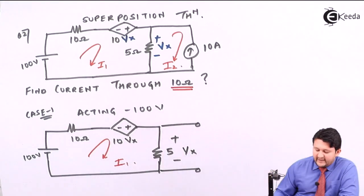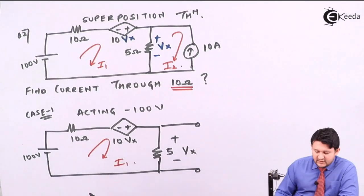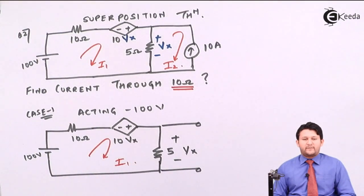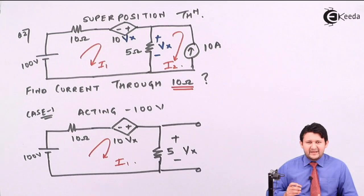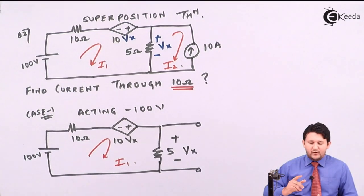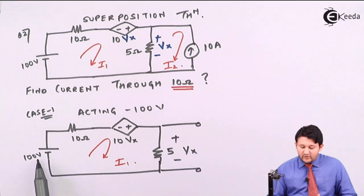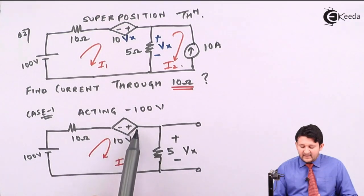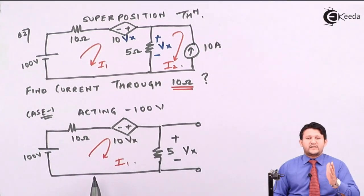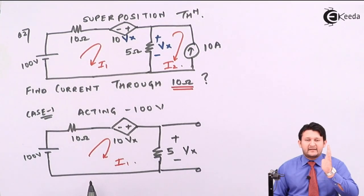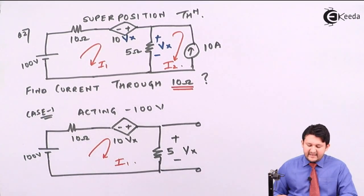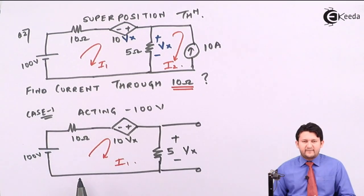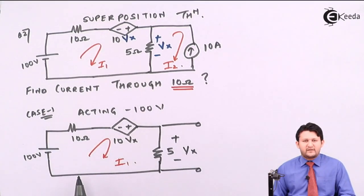Ultimately, I need to find the current across 10Ω, which is I1. Let's apply KVL to this mesh. In this mesh you see two resistances: 10Ω and 5Ω — add them to get 15Ω. The current flowing is I1. Since we are applying KVL to this mesh, I1 is taken as positive. So we have 15I1 on the left-hand side.